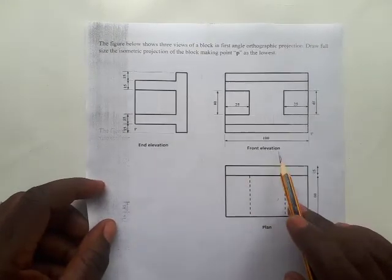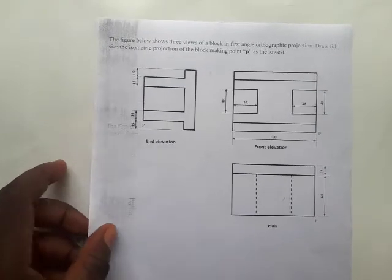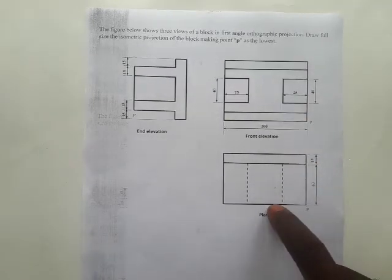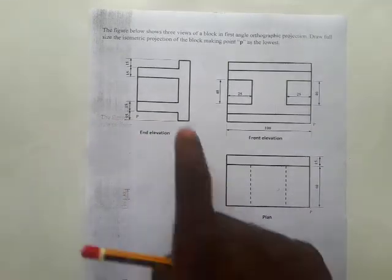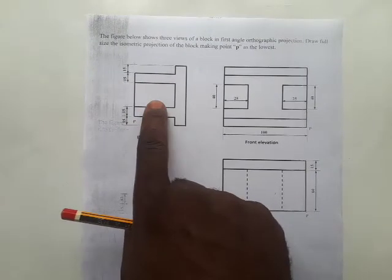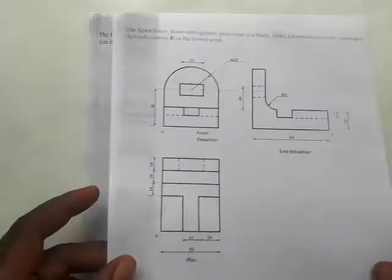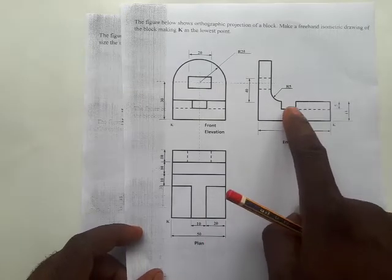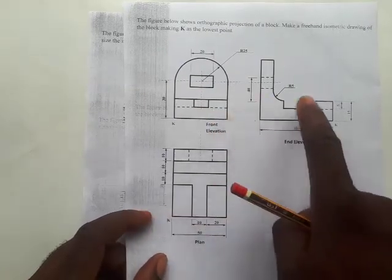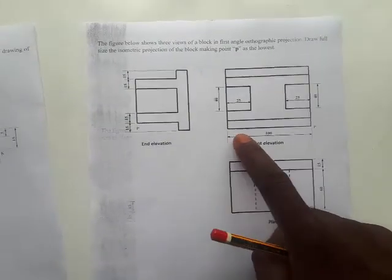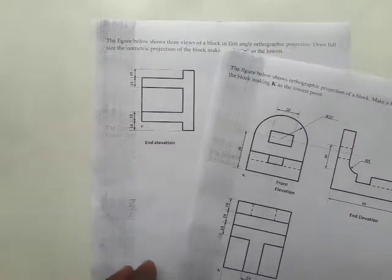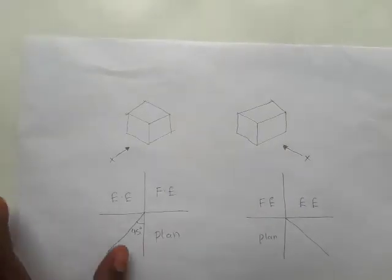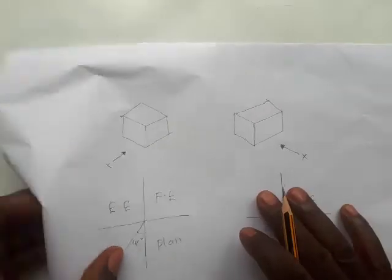This is the end elevation, this is the front elevation, and this is the plan. This is in first angle projection. In first angle projection, you have the front elevation on top, you have the plan at the bottom, and you have the end elevation either on the left-hand side or top-left, or at the top-right. Look at this other example — you can see the front elevation is at the top, the plan is here, and the end elevation is at the top-right.